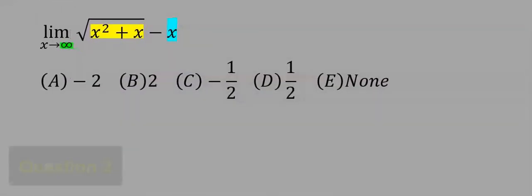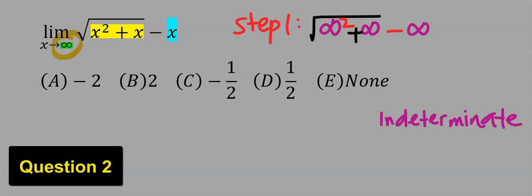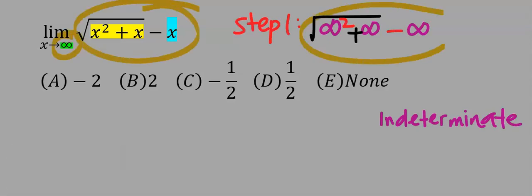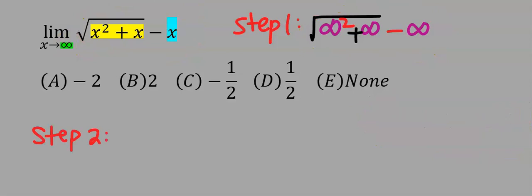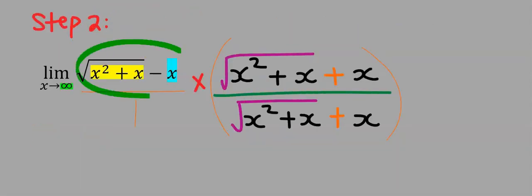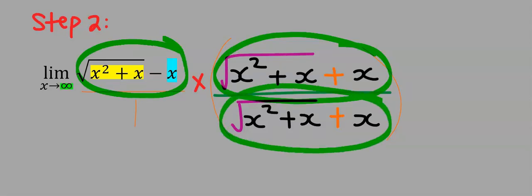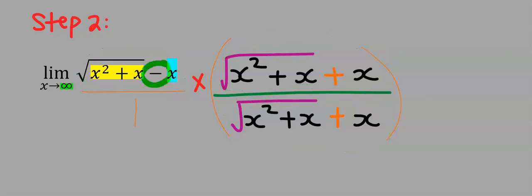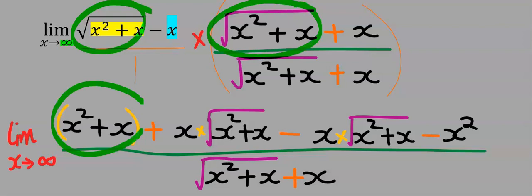Next, let's consider this question. The first step: if you plug infinity into this function you get an indeterminate solution. Hence in step number 2 we rationalize this function by conjugate — we multiply by the numerator expression and also by the denominator. However, the arithmetic operator separating them will change. This will multiply this and you get the next expression.